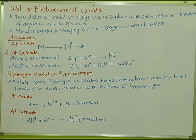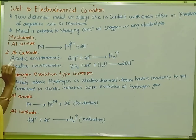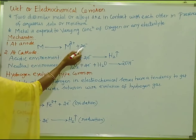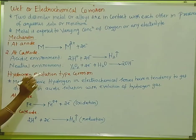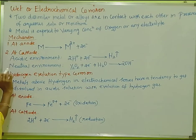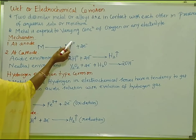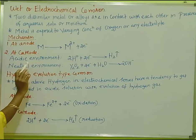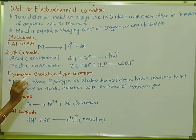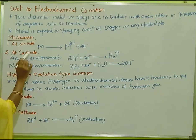Now let's talk about the mechanism — the anode reaction and the cathode reaction. At the anode, oxidation takes place, which is the loss of electrons. The metal loses electrons and is converted to a metal ion. This is the anode reaction.